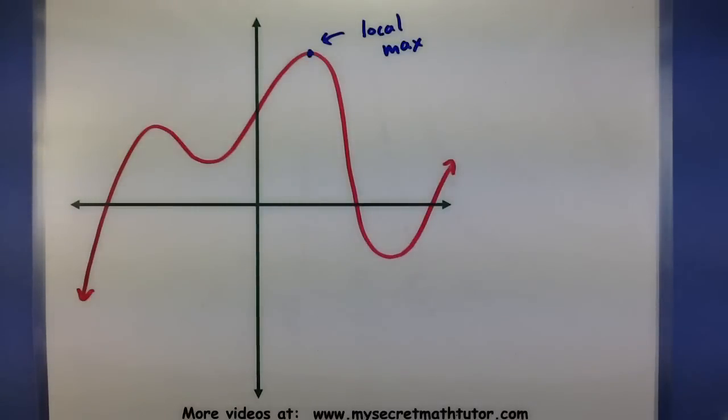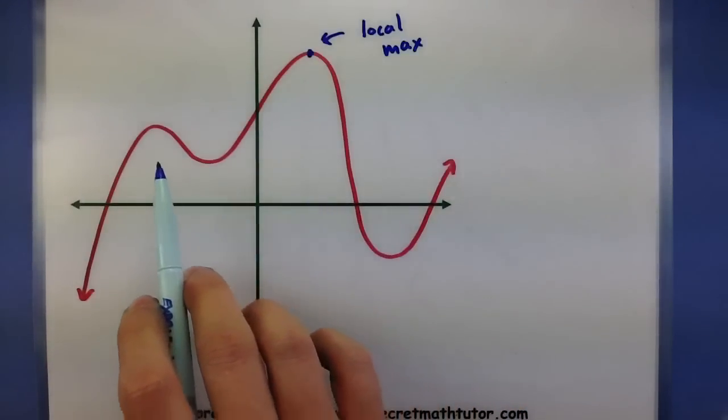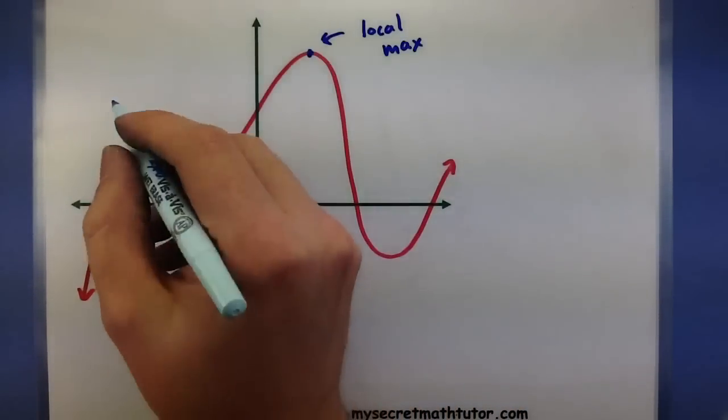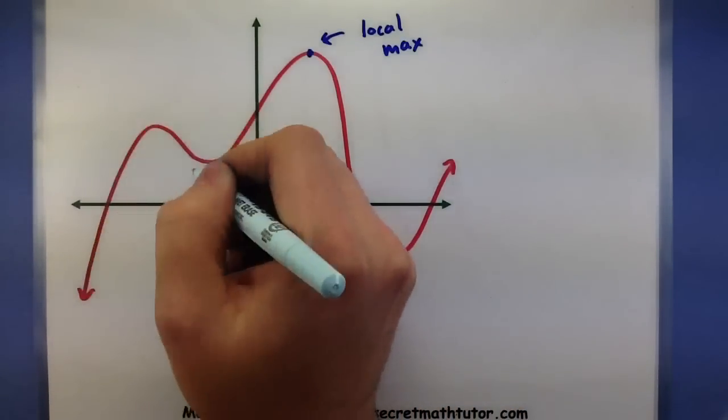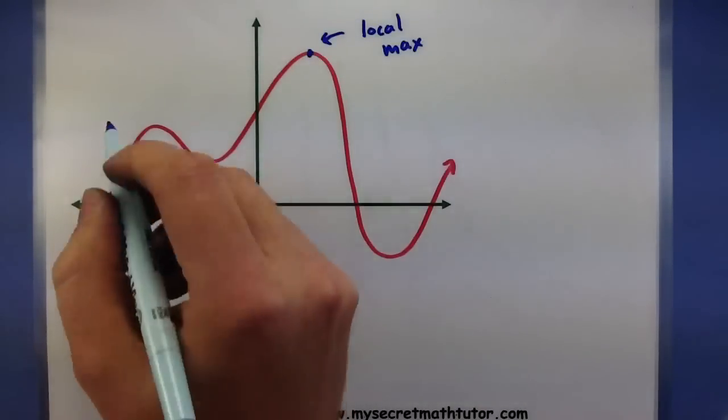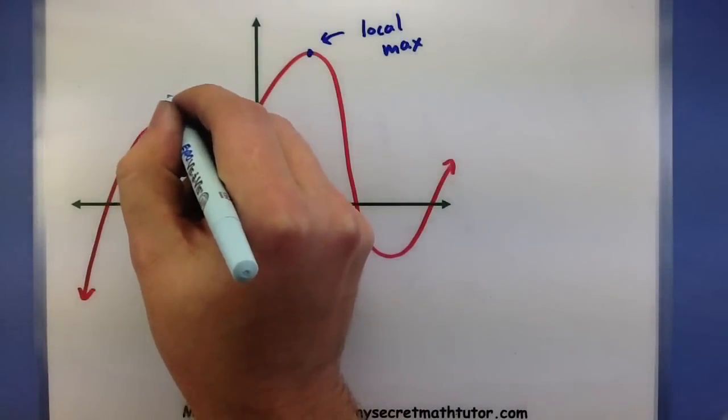Now you can see with this type of definition that I might actually have more than one local max. It all depends on what interval I'm looking at. So if I look at this small interval over here, then I have another local max.